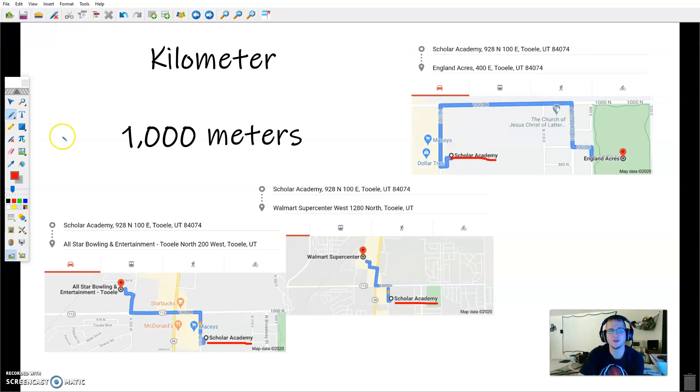So if you think about our school, if we were to walk from our school over to England Acres Park back there, that's the park with the playground and the gigantic field with the big old walking path that goes around it, England Acres Park is about a kilometer away. Another location from Scholar Academy to somewhere in the Walmart parking lot is going to be about a kilometer away. And then again, from Scholar Academy to about the bowling alley, All-Star Bowling, that's about a kilometer away. So those three distances can kind of give you an idea. If we were to start walking from the school to England Acres, or from the school to Walmart, or from the school to the bowling alley, those three things are about a kilometer in distance.